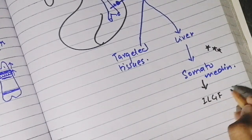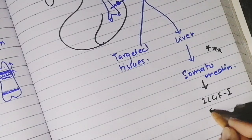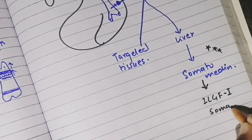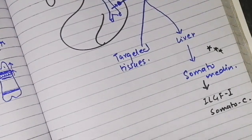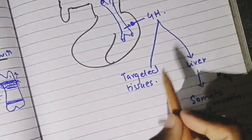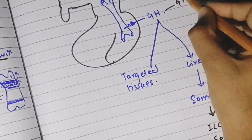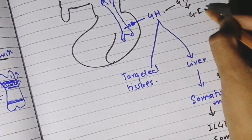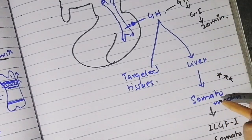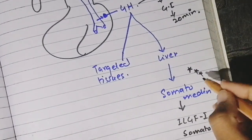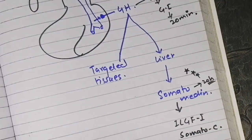We call it insulin-like growth factor 1, or somatomedins. There are four different types of somatomedins. An important application is that growth hormone in general circulation has a half-life of only 20 minutes, but somatomedins, being bound to proteins and different tissues, have a half-life of 20 hours.